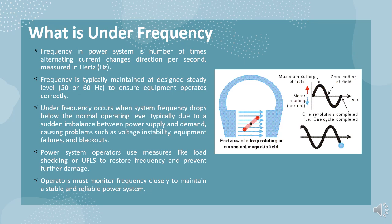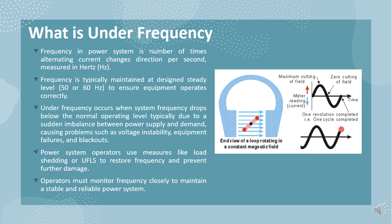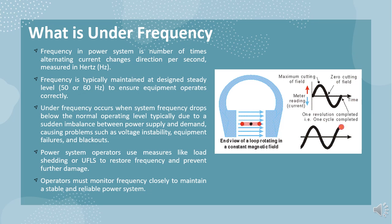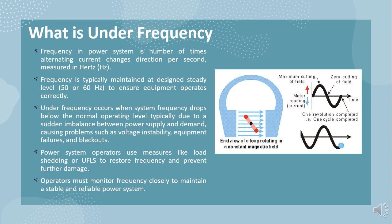To restore frequency and prevent further damage, power system operators use measures like load shedding or under-frequency load shedding (UFLS). Load shedding involves the intentional reduction of power to a section of the power grid, while UFLS is a more automated process that involves disconnecting certain loads to restore frequency. It's important for power system operators to monitor frequency closely to maintain a stable and reliable power system. In summary, under-frequency occurs when the power system frequency drops below the normal operating level due to an imbalance between power supply and demand. Power system operators use measures like load shedding and UFLS to restore frequency and prevent further damage.